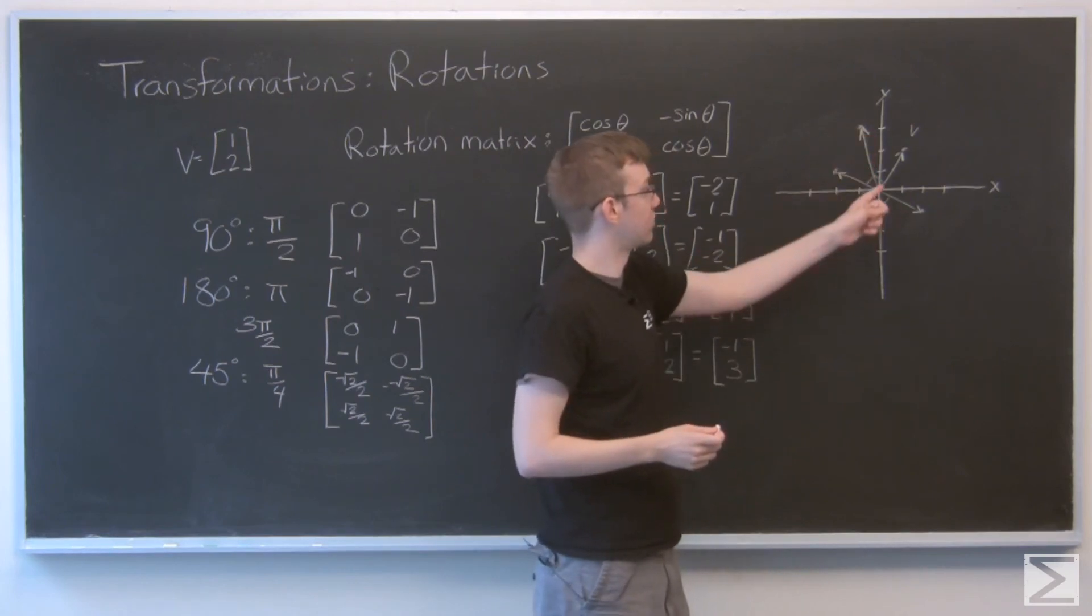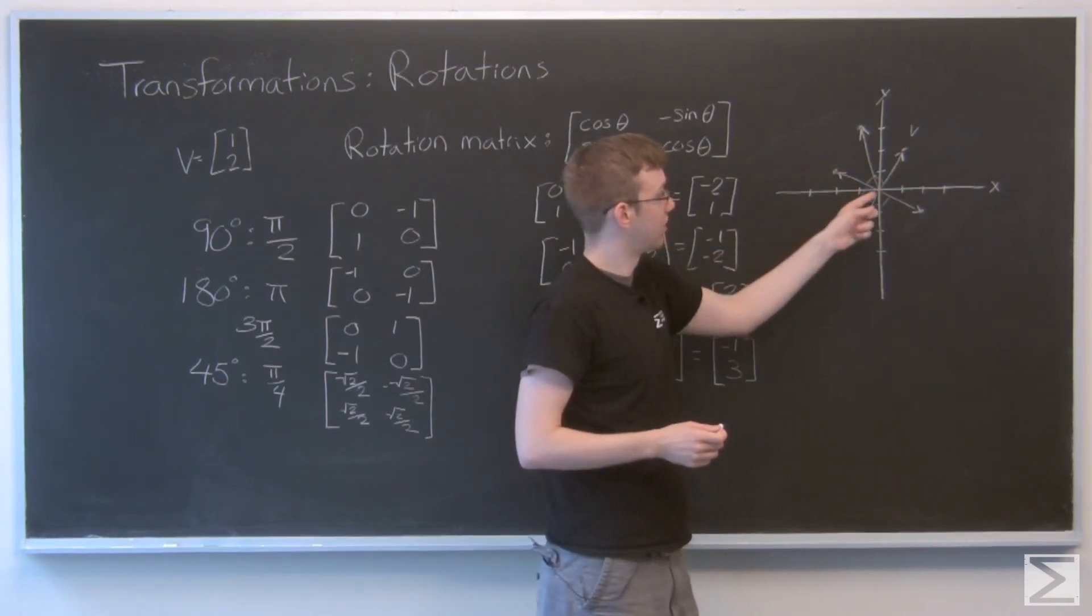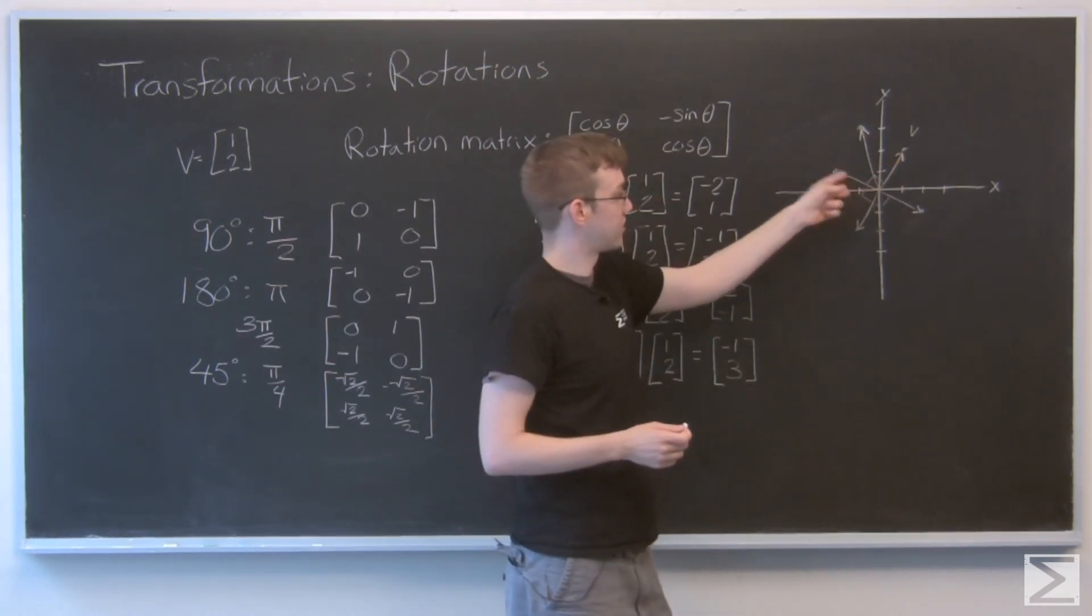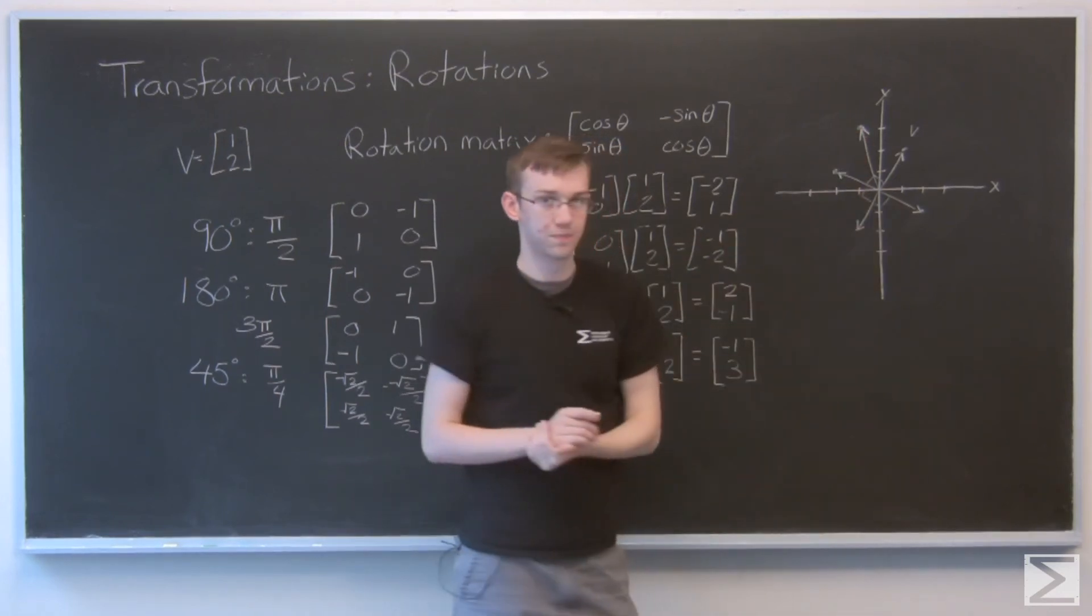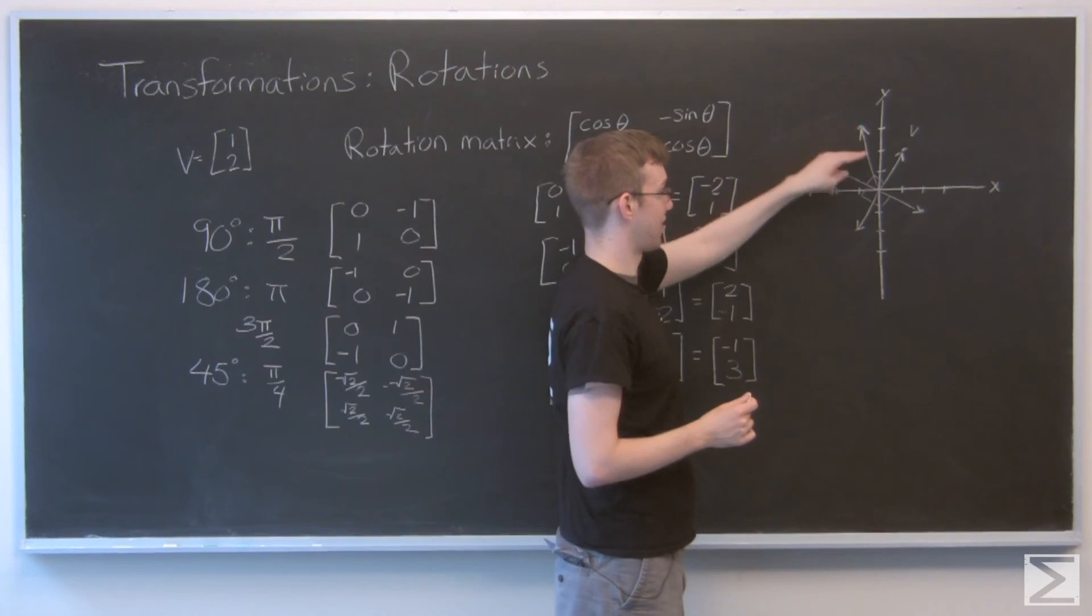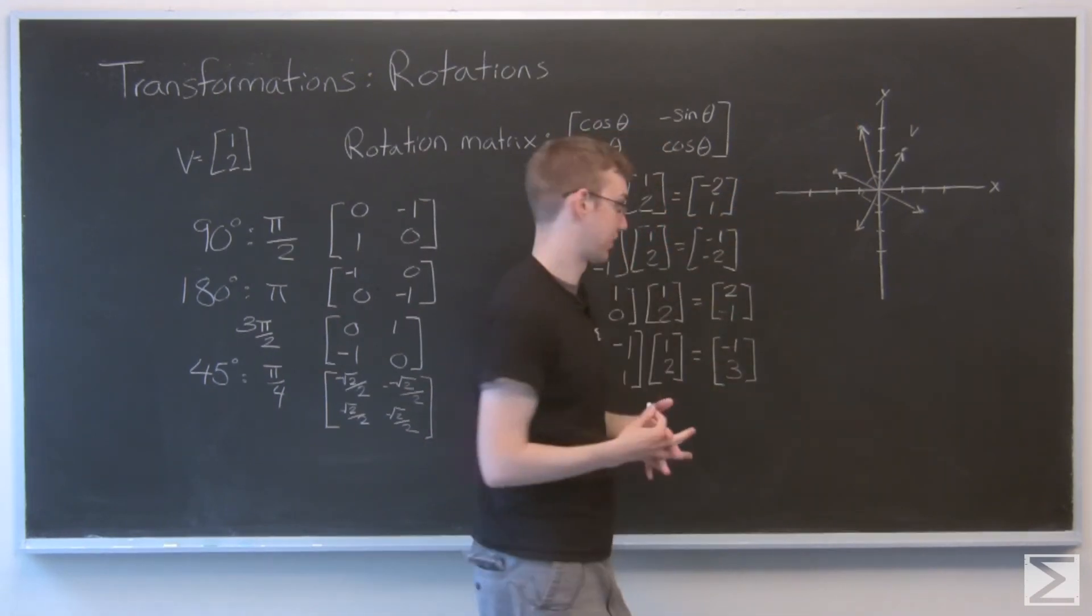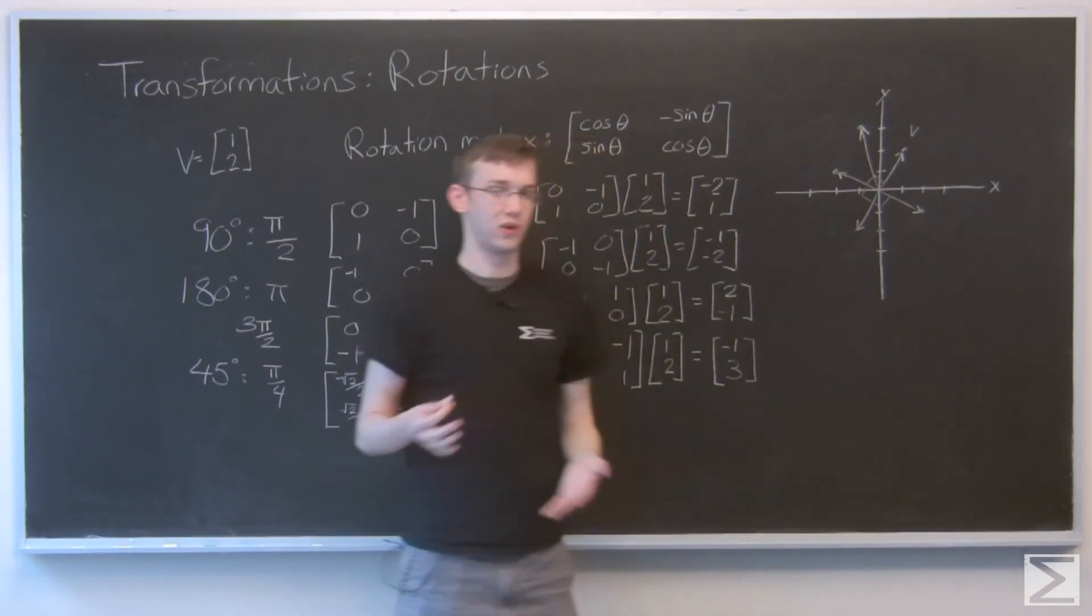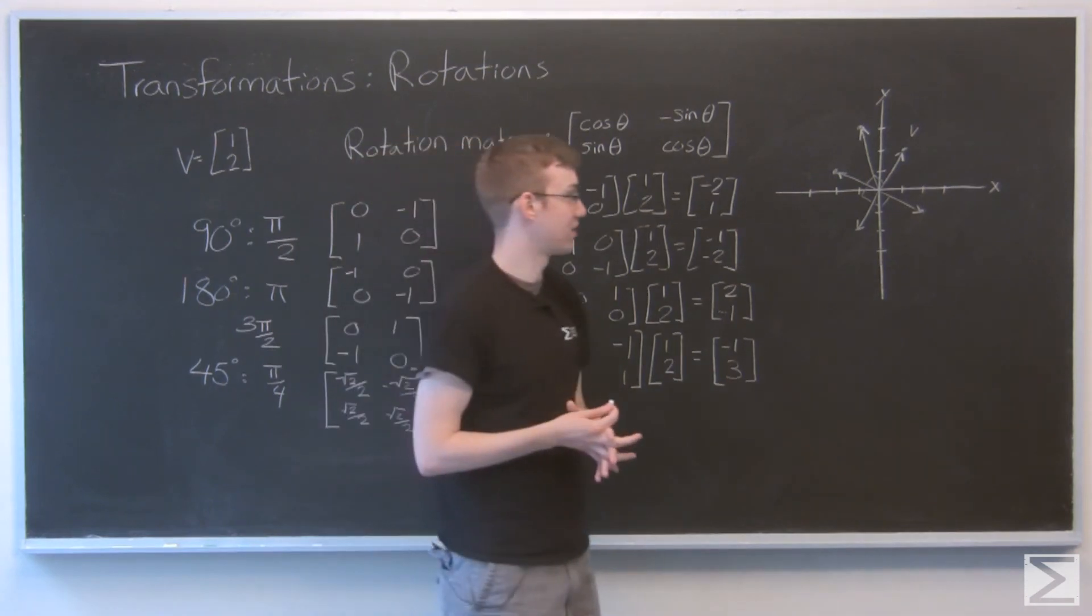And there we have it. This angle will bisect that one and that one, which was our original vector and that was 90 degrees. So here's 45 degrees. And if we want, we can scale that back down to the original size of the vector. But just because that involves square roots and stuff, I didn't really want to handle that kind of stuff.